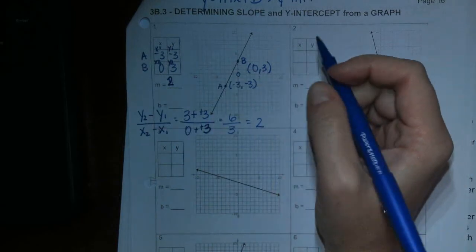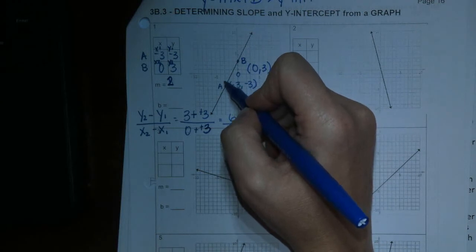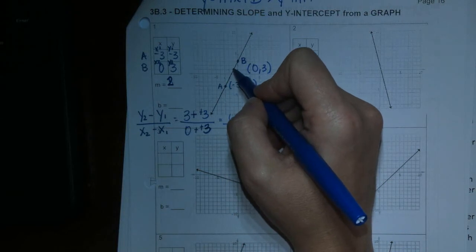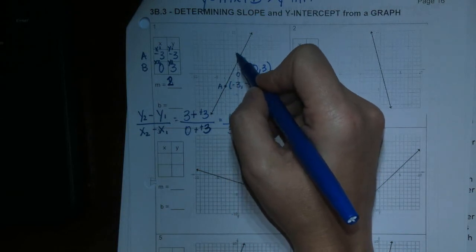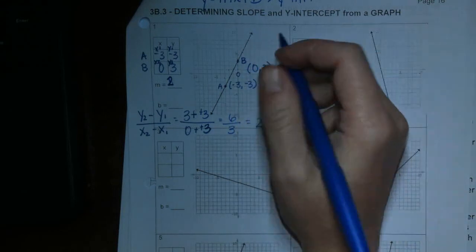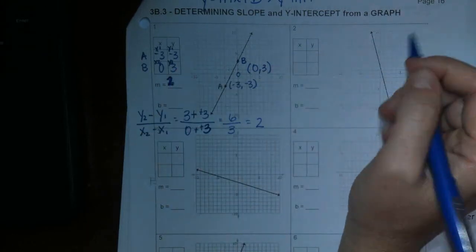Let me show you something how you can kind of check that. So basically what that's saying is you rise 2 and go over 1 each time. 1, 2, 1. 1, 2, 1. 1, 2, 1. And all those points would land on that line. So it's a rise 2 over 1. It's a positive 2 slope.